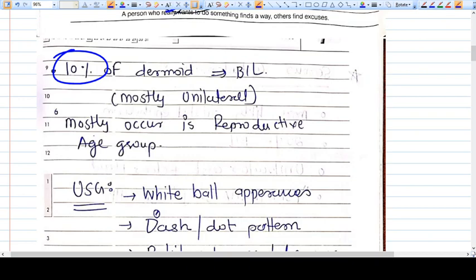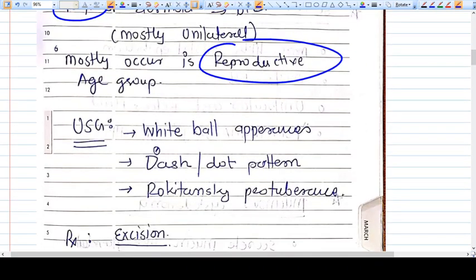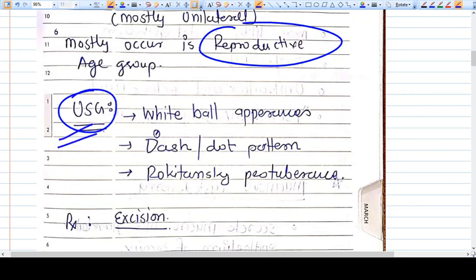The most common age group is reproductive age. USG appearances include white ball appearance, dash-dot pattern, and Rokitansky protuberance.